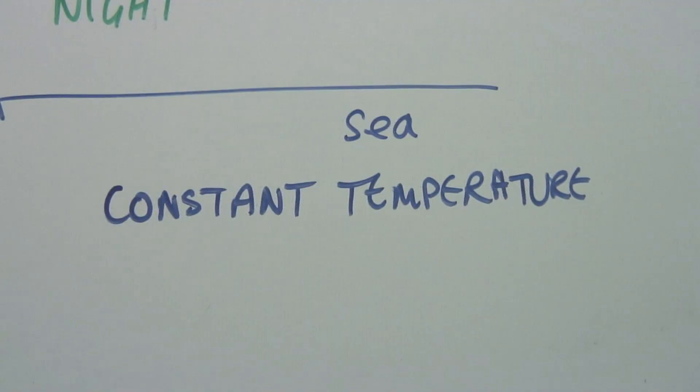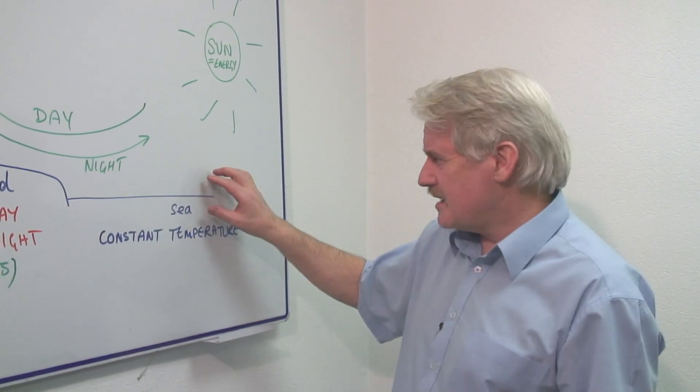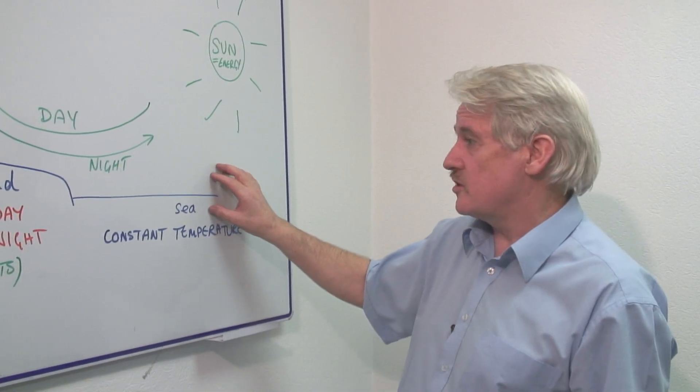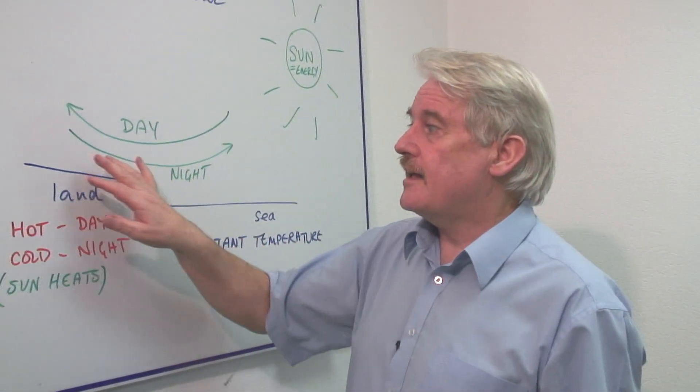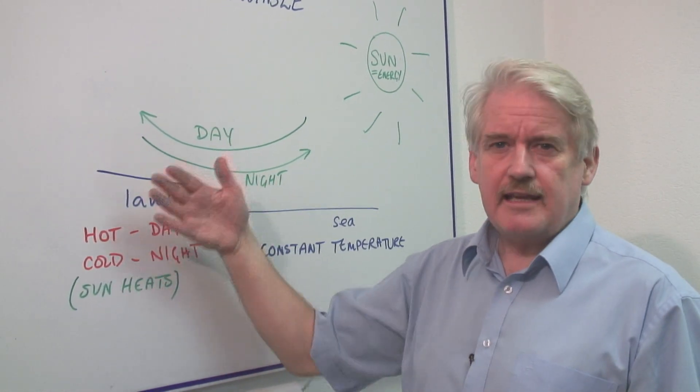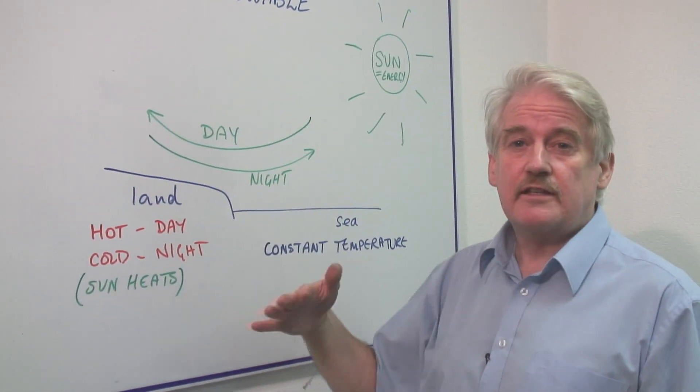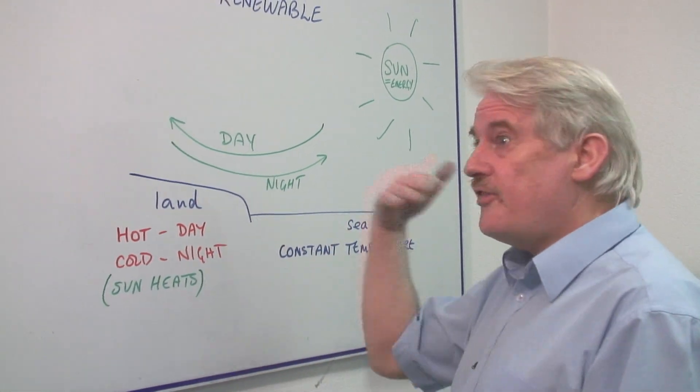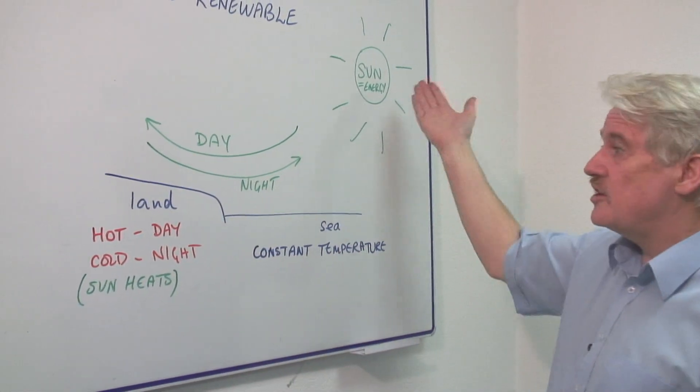The air just above the sea is going to maintain more or less a constant temperature because the sea's temperature remains more or less constant. Whereas the land tends to heat up and cool down, heat up during the day in the direct sun and then cool down at night. And this is a result of the energy from the sun.